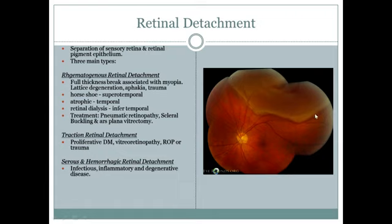Superior temporal = horseshoe tear; inferior temporal = retinal dialysis; whole temporal = atrophic detachment. Treatment for rhegmatogenous retinal detachment is pneumatic retinopexy, scleral buckling, and pars plana vitrectomy. Tractional retinal detachment involves fibrosis — as seen in proliferative diabetic retinopathy, retinopathy of prematurity, or trauma. Serious and hemorrhagic retinal detachment is when blood or serous secretion accumulates under the retina.